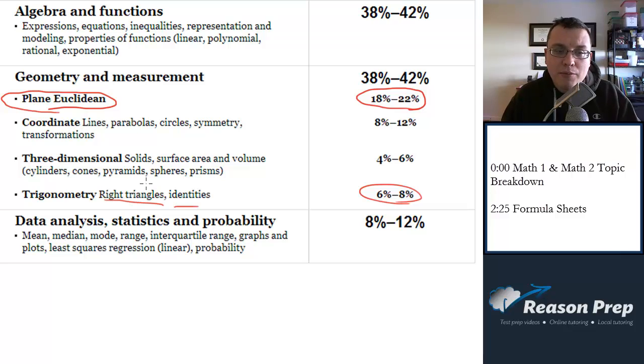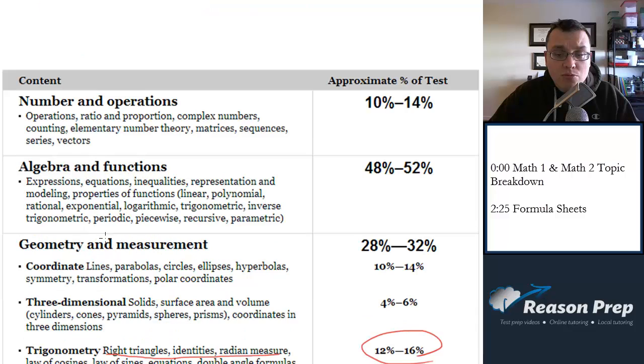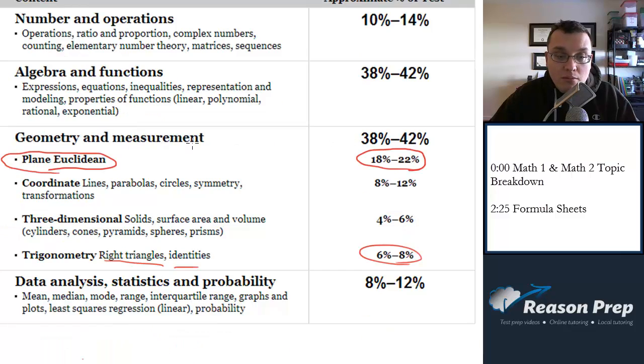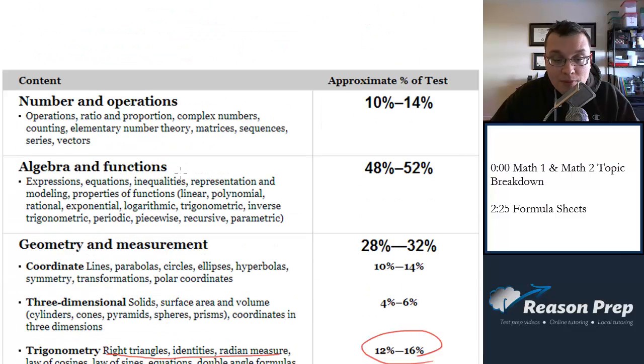But otherwise, they're the same. They both have coordinate geometry, both have three-dimensional geometry. To make up for it, Math 2 has much more algebra and functions, so 48% to 52% compared to 38% to 42% from the Math 2, Math 1. And the types of functions you're going to see in Math 2 are generally going to be more complex.